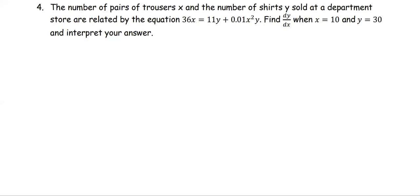In this example, the number of pairs of trousers x and the number of shirts y sold at a department store are related by the equation 36x = 11y + 0.01x²y. We're going to find dy/dx when x = 10 and y = 30,